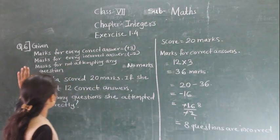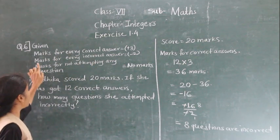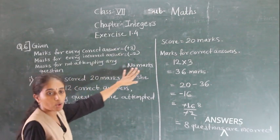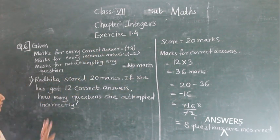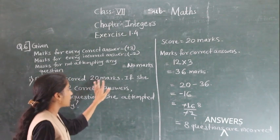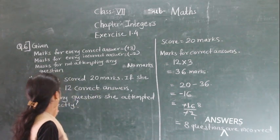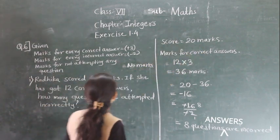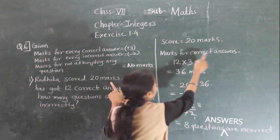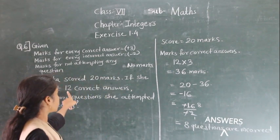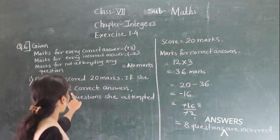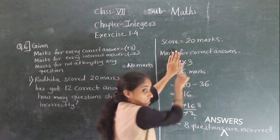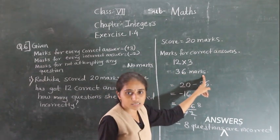Let me explain again. Marks for every correct answer: 3. Marks for every incorrect answer: minus 2. Marks for not attending: 0. Radhika's score is 20 marks. She has 12 correct answers, so 12 threes are 36 marks. For correct answers she got 36 marks, but her total score is 20 marks.